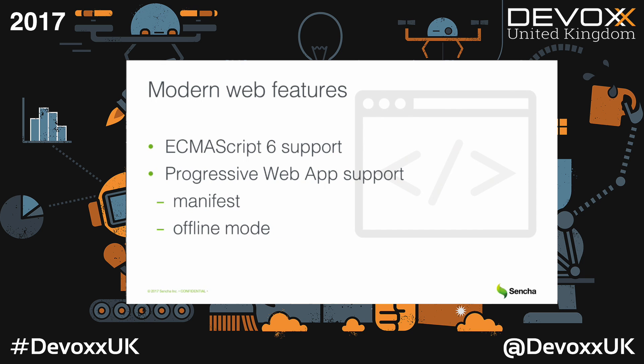What is very popular now, we support new versions of ECMAScript 6, and we support progressive web app features that allow your web application to look and behave like a native application. For example, you can launch your application from an icon on the home screen or support offline mode using service workers. All these features can be enabled with just some configuration - you do not need to manually code your service workers. You just specify which part of the application should be cached and everything will be done for you.